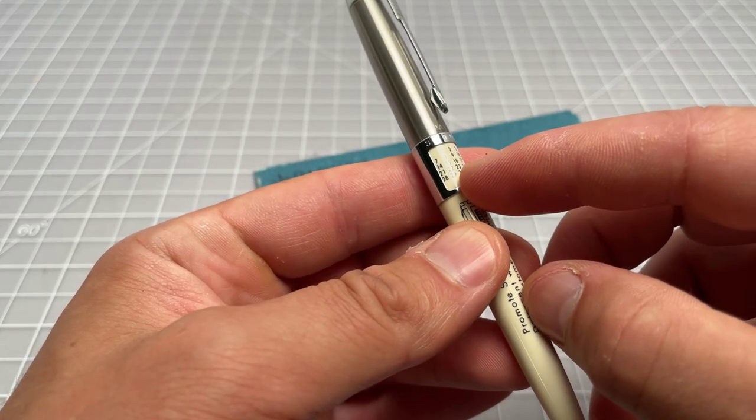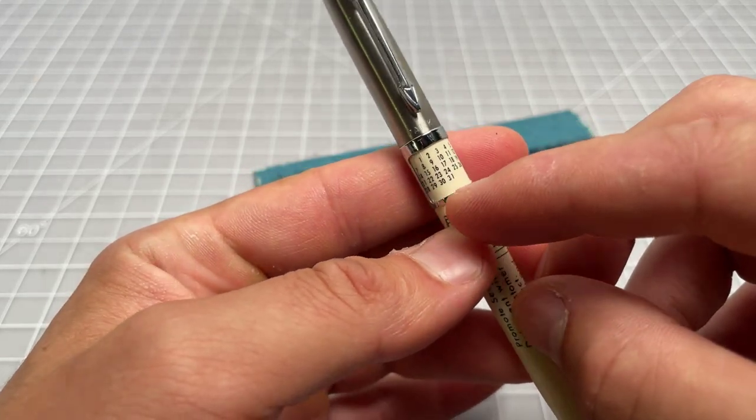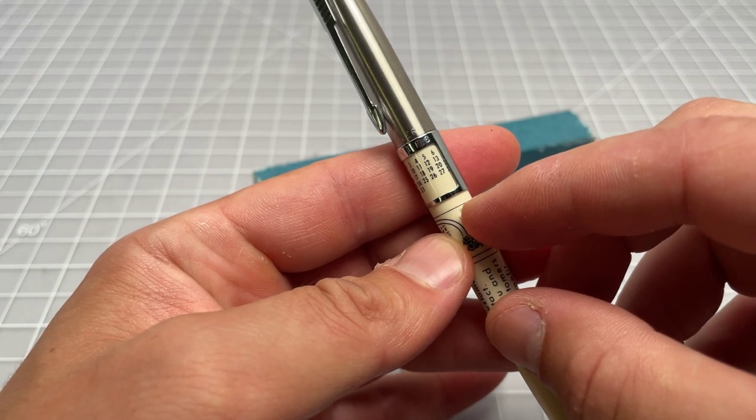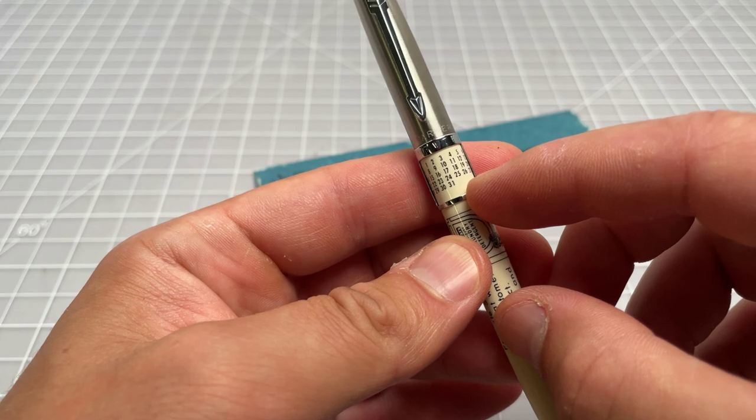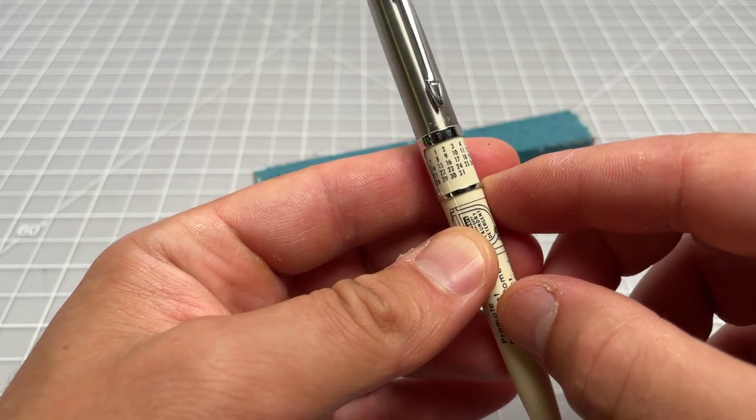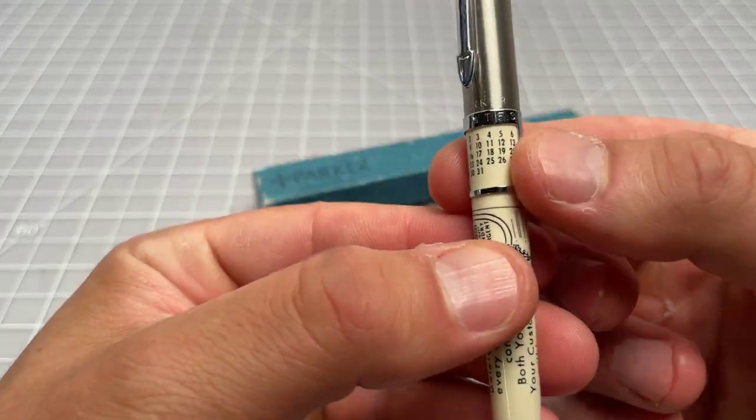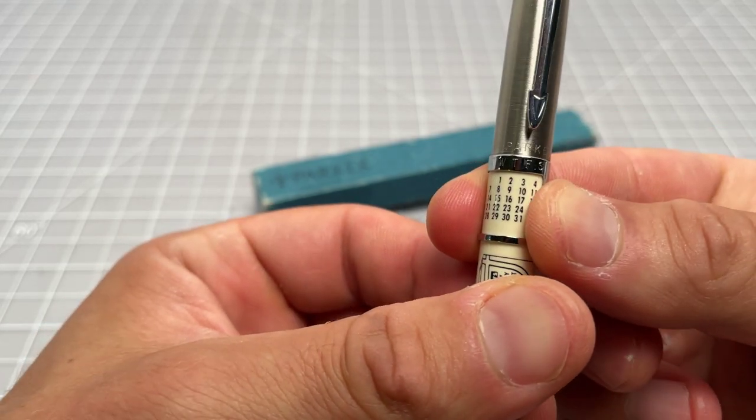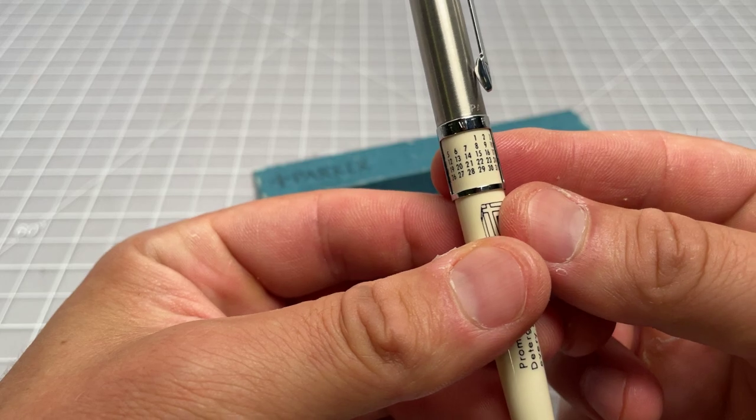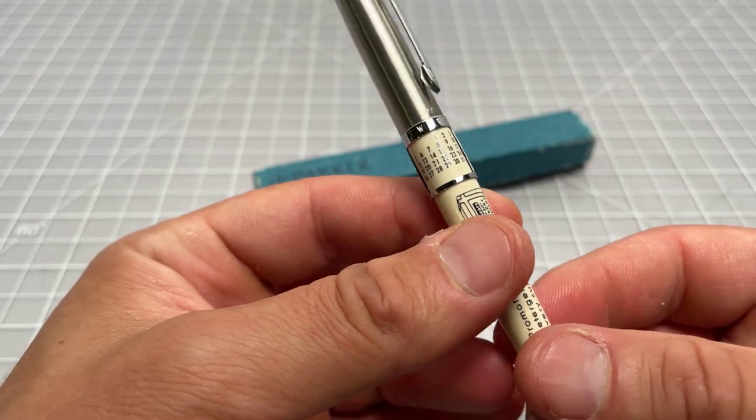So it has a window here. You can see there Sunday, Monday, Tuesday, Wednesday, Thursday, Friday, Saturday. And then some dates. And then what happens is you would spin this to line up with the date configuration of the month and the year you're in.